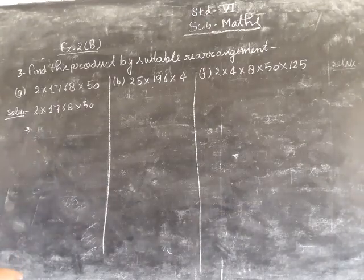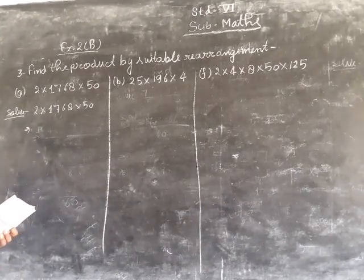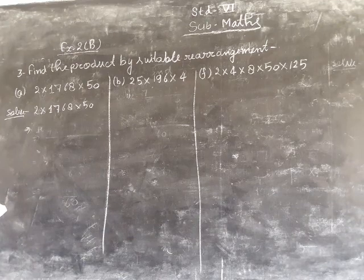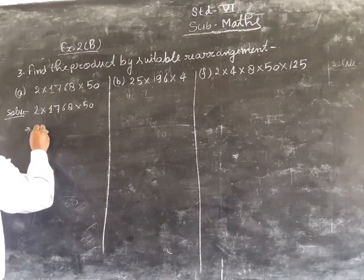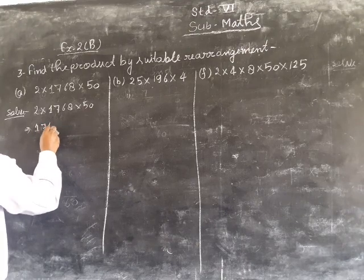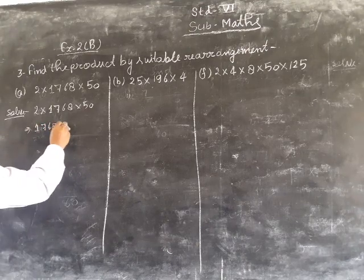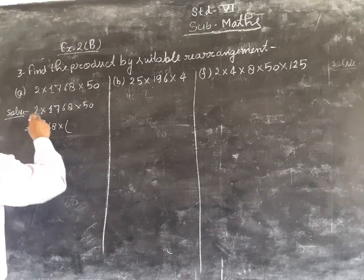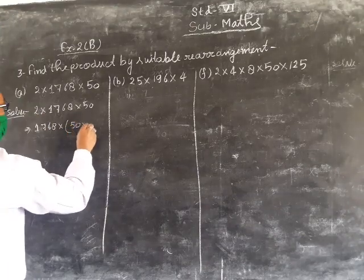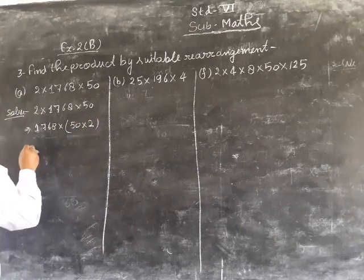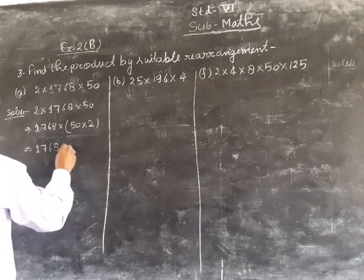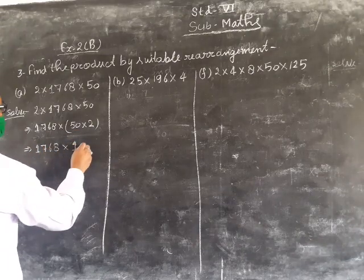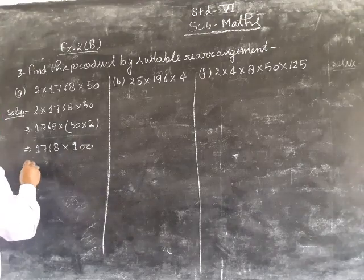Now we rearrange this: 4768, we have to do this multiply by 50, multiply by 2. So this becomes 4768 multiply by 100.